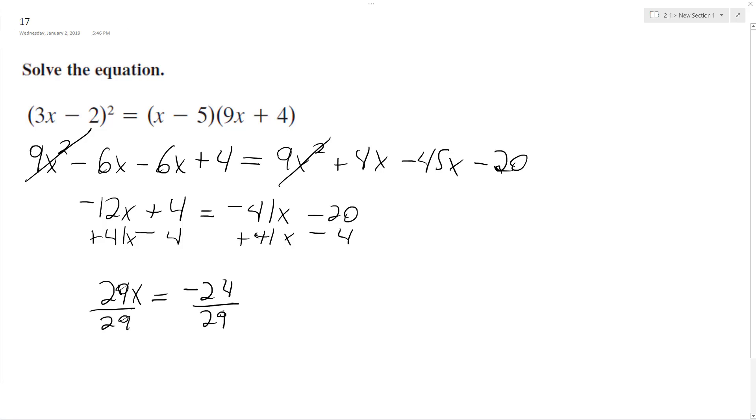Divide by 29. I get x is equal to negative 24 over 29. And that's it.